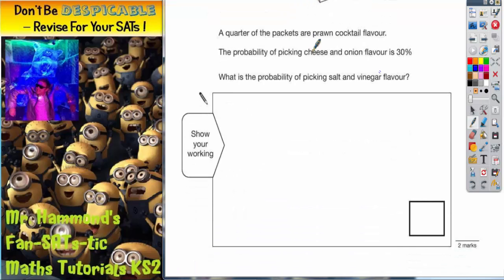A quarter of the packets are prawn cocktail flavour. Prawn cocktail we'll call PC for short. The probability of picking cheese and onion is 30%, cheese and onion we'll call C and O for short.